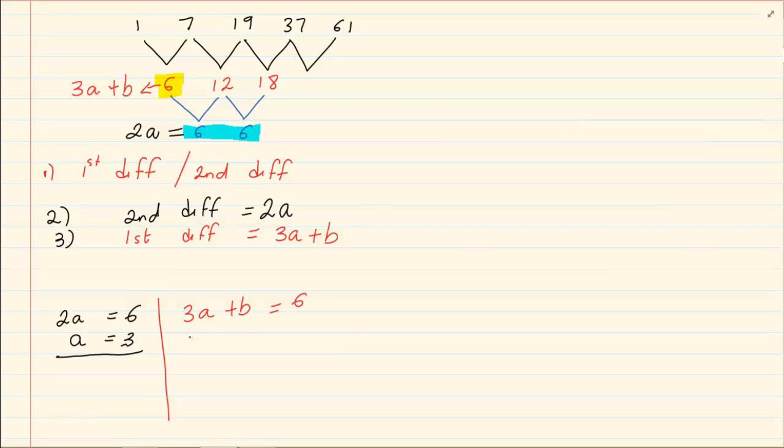You already have a. So we know that it's 3 into 3 plus b is equal to 6. 3 times 3 is 9. So b is equal to 6 minus 9. Giving us that b is equal to minus 3.